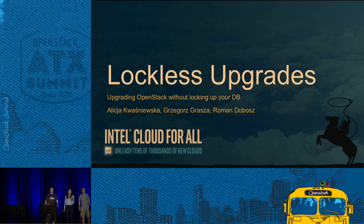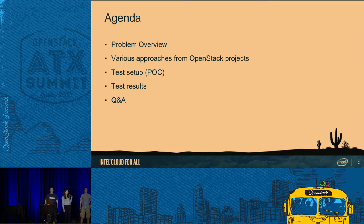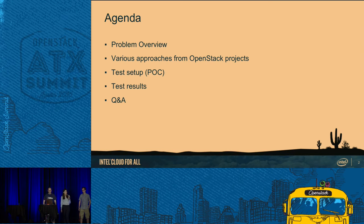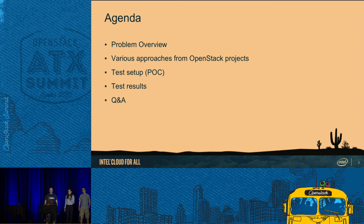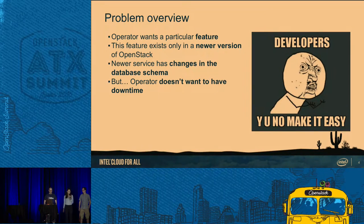Hello, thanks for coming. My name is Alicia, and together with Greg and Roman we'll walk you through the subject of lossless upgrades. First, we will explain the idea of upgrades with minimal downtime and specify some assumptions that have to be fulfilled while migrating database schema online. Then we'll present some approaches adapted in different OpenStack projects. Next we'll move to the implemented proof of concept designed to test table lock problems, and finally we'll present some results comparing different database engines.